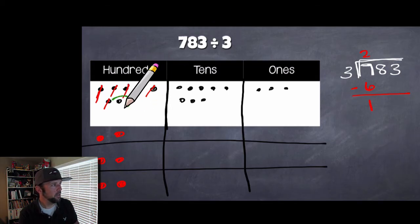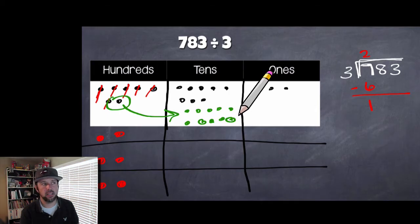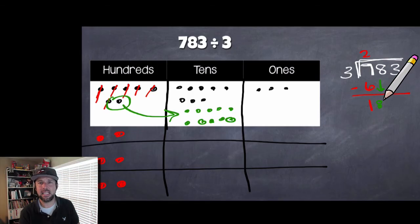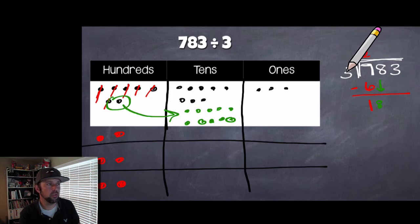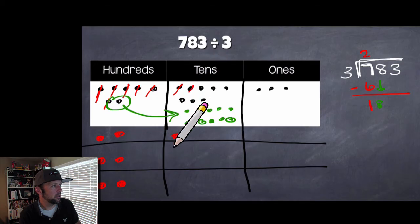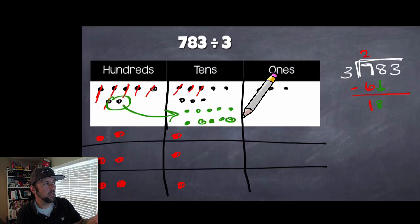Now I take that leftover 100 and bring it over as 10 tens. Combined with the 8 tens already there, I now have 18 tens total. On the standard algorithm side, I bring down the 8 to get 18 in the tens place. If you haven't already grouped that leftover 100 into 10 tens and started moving those tens into the three groups, go ahead and do that now and see what you end up with.